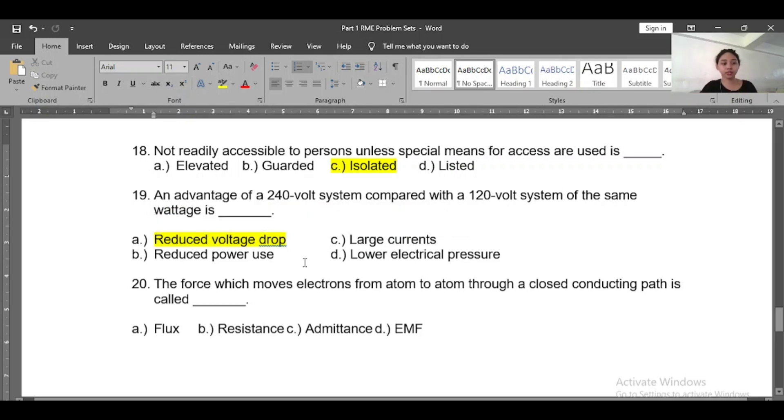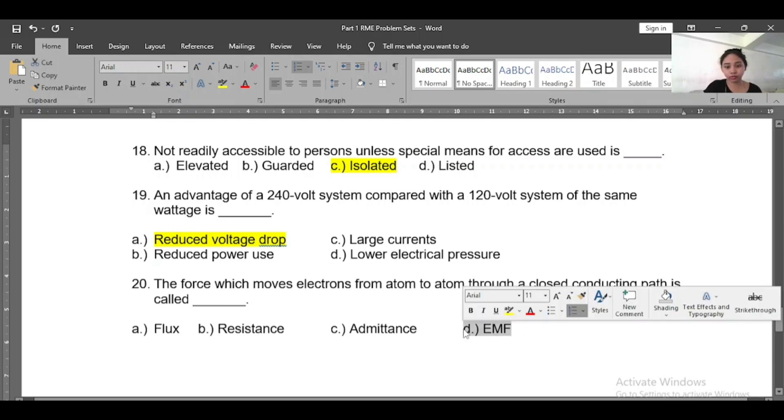So let's go to number twenty: The force which moves electrons from atom to atom through a closed conducting path is called - A) Flux, B) Resistance, C) Admittance, D) EMF. So the force which moves electrons, the answer would be EMF. EMF stands for electromotive force, or the voltage. So this is force.